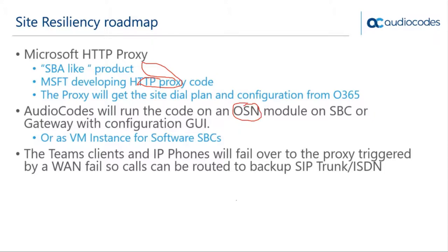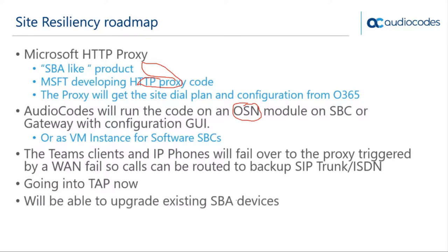The Microsoft HTTP proxy solution may not include IM and presence — likely just phone calls — but making calls is what really matters. We're entering TAP right now with two or three UK customers, meaning general availability is probably in autumn. Site survivability is a key part of enterprise telephony and it's good to see it finally happening for Teams. Existing SBC devices with modern OSN modules should have an upgrade path from Skype SBA functionality.